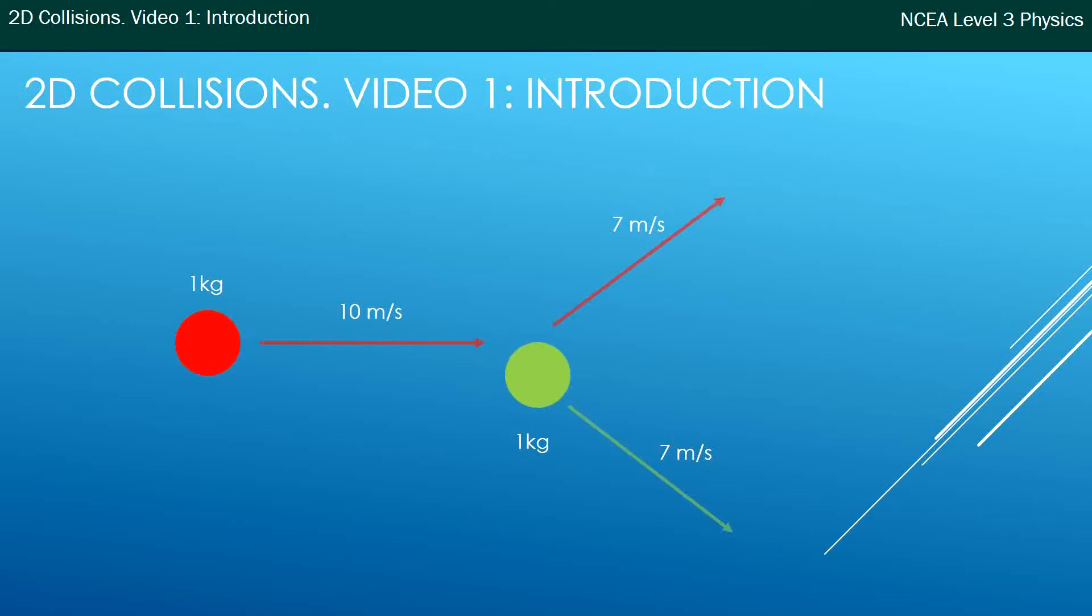Now if you remember from last year, momentum is mass times velocity. The red ball has 10 momentums coming in, but out it has 7 momentums and the green ball has 7 momentums. And 7 plus 7 is 14, which does not equal what it started with, the 10.